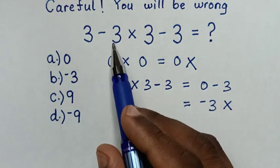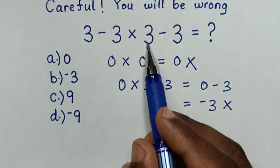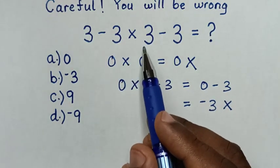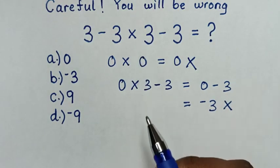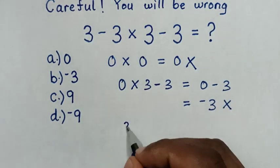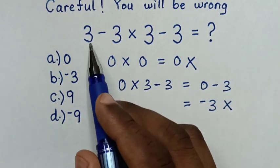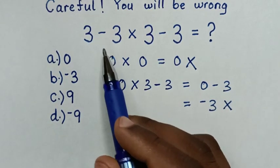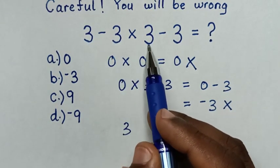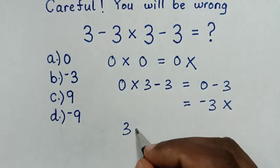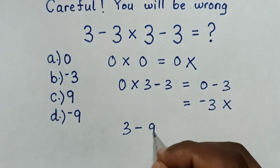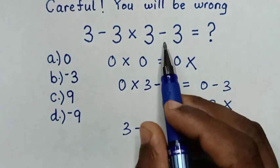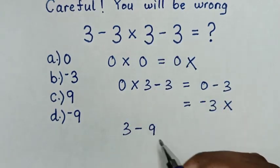If you solve 3 times 3 is 9, so it will be 3 — which is this — then minus 3 times 3 is 9, so minus 9, then minus 3.